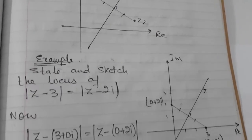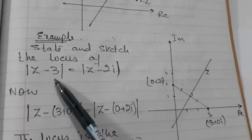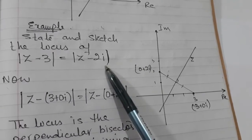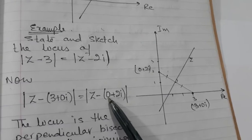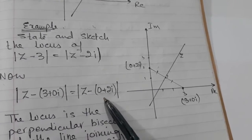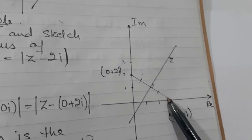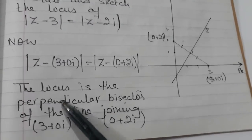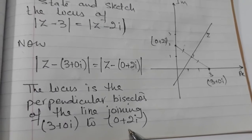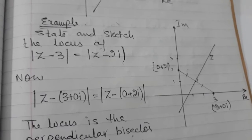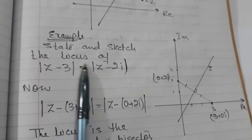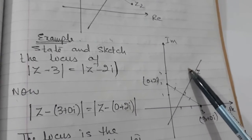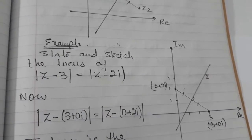Now let's see an example. I have to state and sketch the locus. Writing it in proper form — Z minus Z1 and Z minus Z2 — gives points Z1 as (3, 0) and Z2 as (0, 2). So here are my points and I draw a perpendicular bisector. It is a rough sketch but should be neat. The locus is the perpendicular bisector of the line joining the two points. Any point on Z is equidistant from Z1 and Z2 — that is the meaning of the statement.